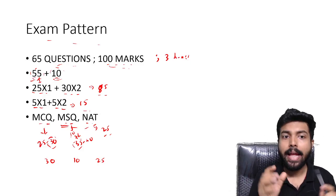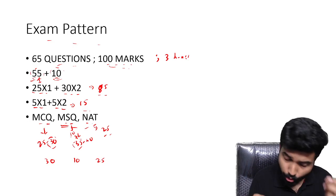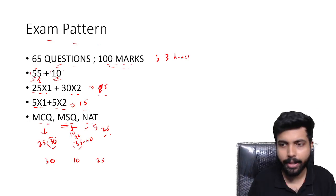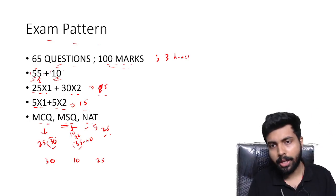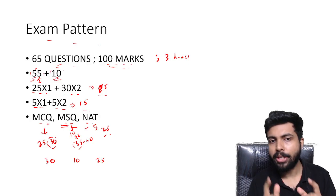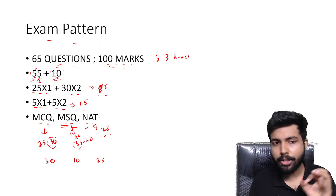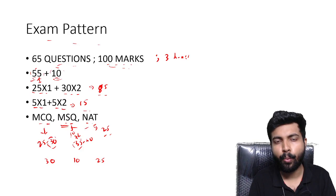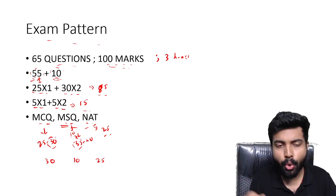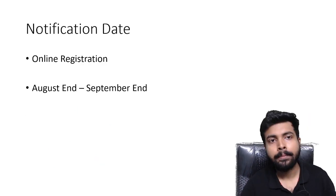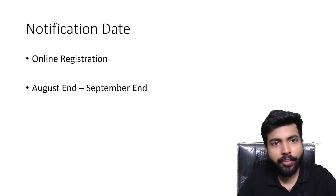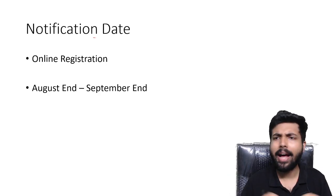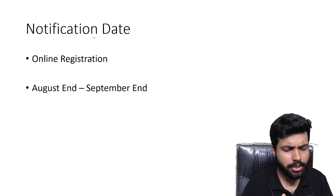Regarding negative marking: only MCQ questions carry negative marking. For a one-mark MCQ, it is minus one-third, and for a two-mark MCQ, it is minus two-thirds. MSQ and NAT type questions do not have any negative marking.